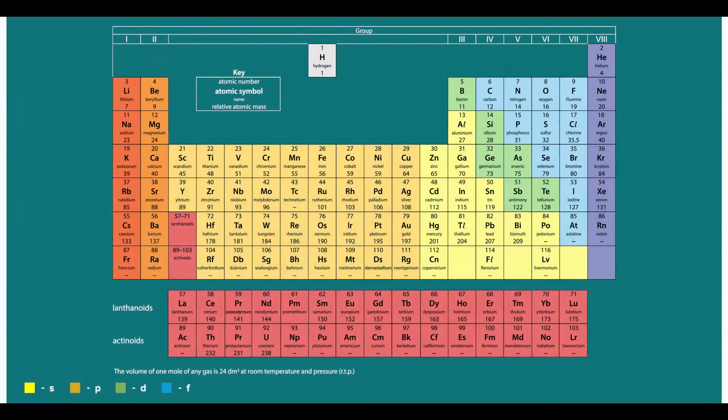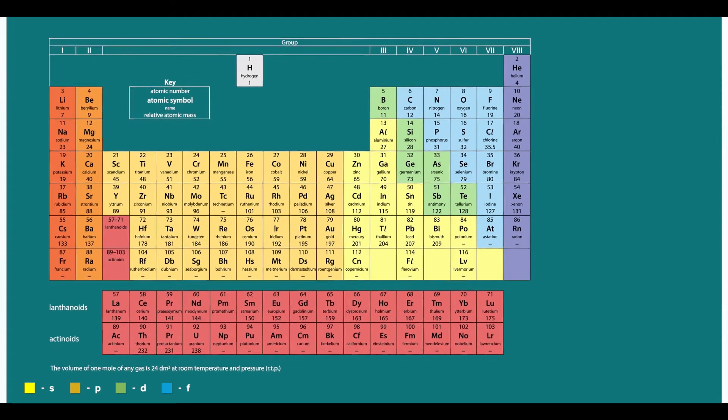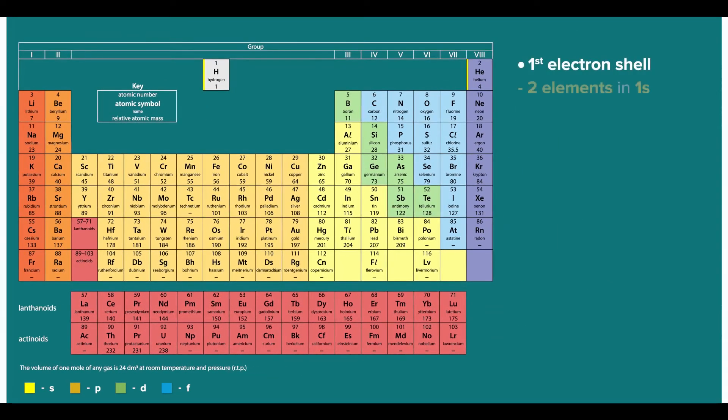Ah, so to know how many electrons can be in the first electron shell, I simply count the number of 1s in the prefix, right? So since there are 2 elements with the 1s label, then that means there can be a maximum of 2 electrons in the first electron shell. Correct!